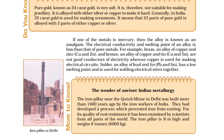An alloy is prepared by first melting the primary metal, dissolving other elements in definite proportions, then cooling to room temperature. Pure gold (24-karat) is very soft and not suitable for making jewellery, so it is alloyed with silver or copper. In India, 22-karat gold is used for ornaments — 22 parts pure gold alloyed with 2 parts copper or silver. If one of the metals is mercury, the alloy is known as an amalgam. The electrical conductivity and melting point of an alloy are less than those of pure metals. Brass (Cu + Zn) and bronze (Cu + Sn) are not good conductors of electricity, whereas solder (Pb + Sn) has a low melting point and is used for welding electrical wires.